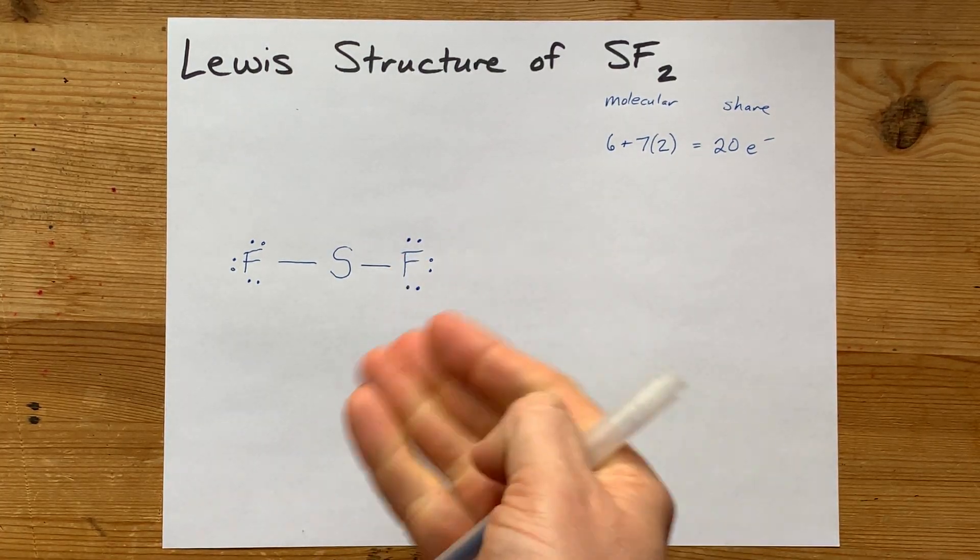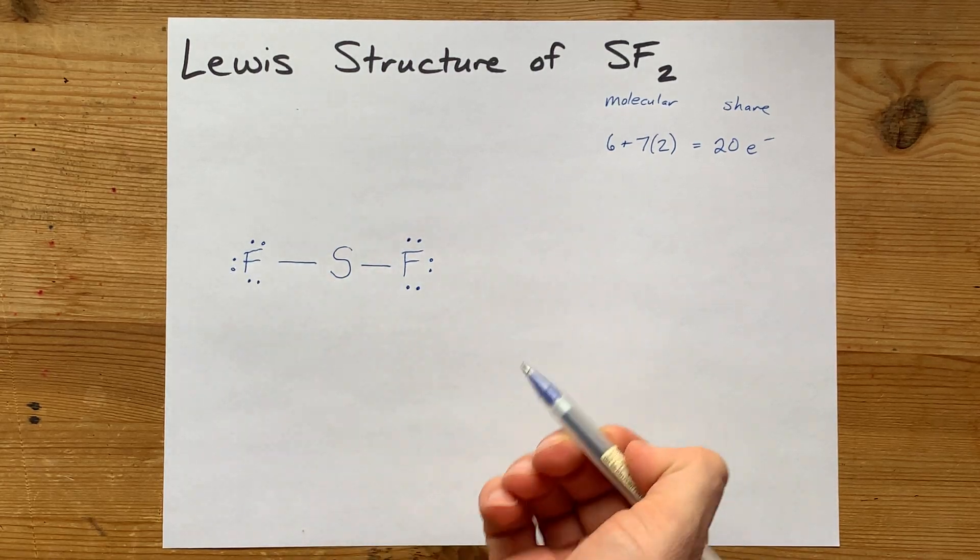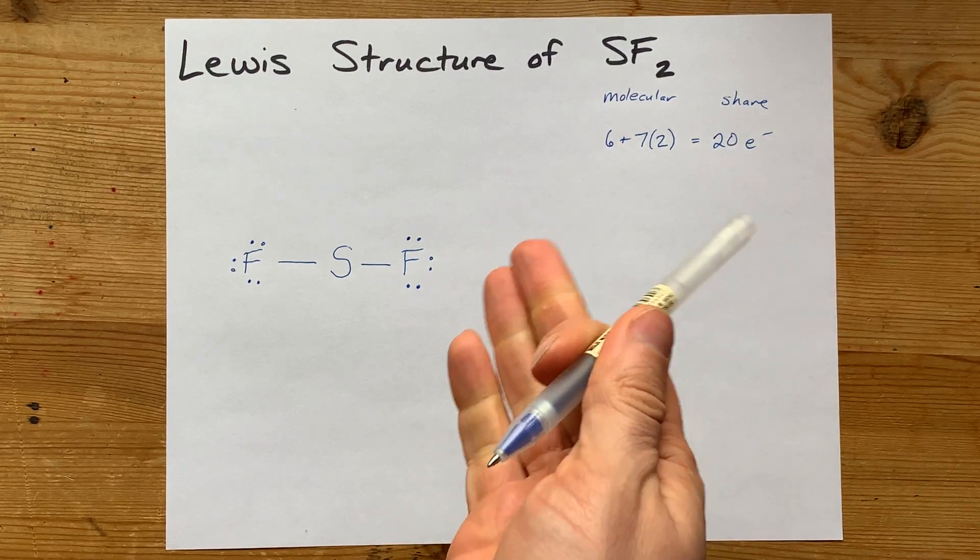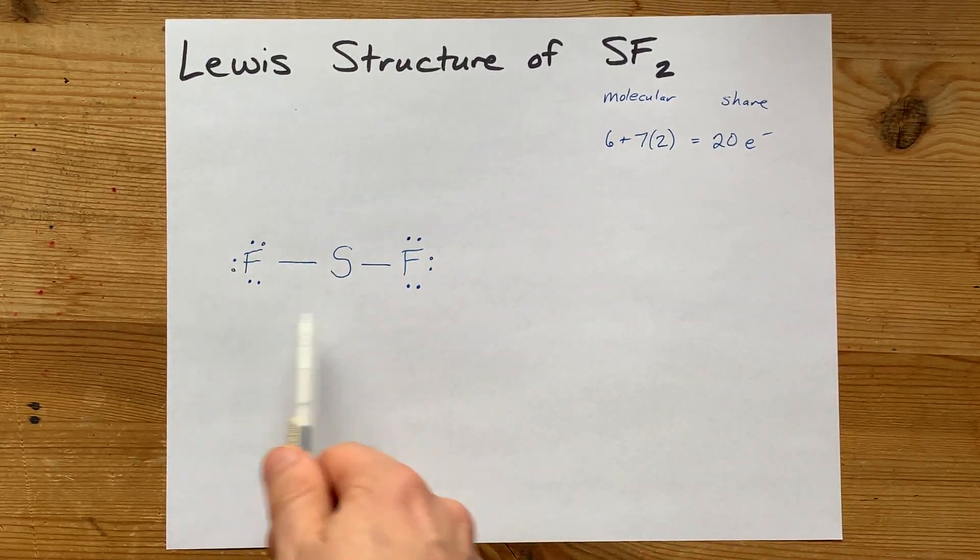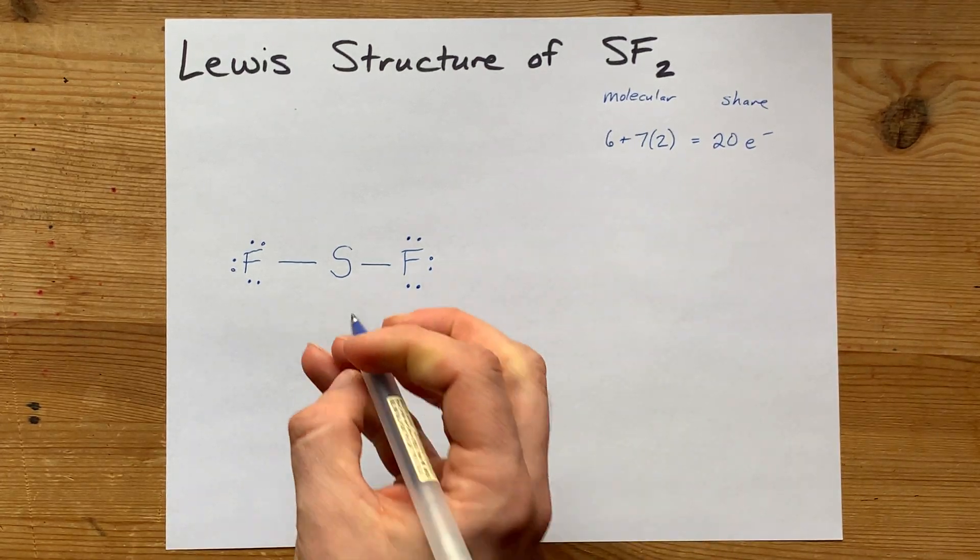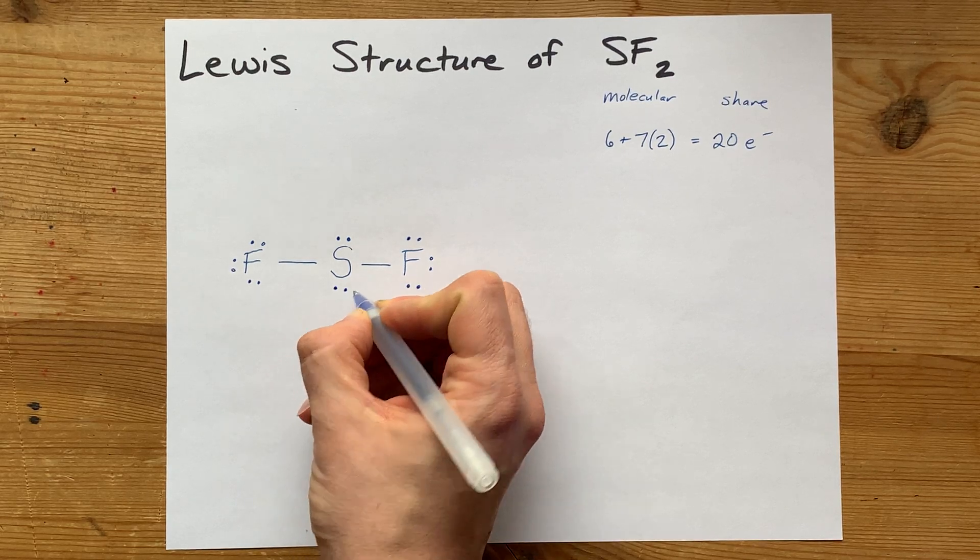But how many electrons have I actually put down here? Two, four, six, eight, ten, twelve, fourteen, sixteen. I need 20 total. Where do you put the extra electrons when the octets of all the outer atoms have already been filled? The answer is you just dump them on the center atom. 17, 18, 19, 20. That's it.